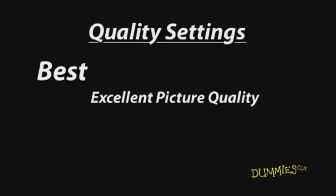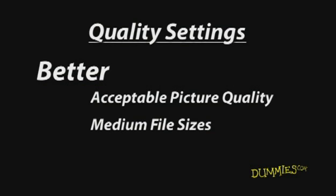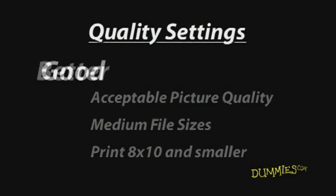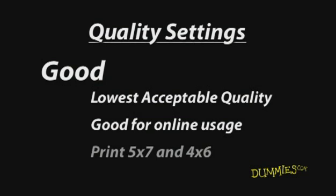Here's a brief description of the quality settings available on many digital cameras, including point-and-shoot and compact. Best gives you excellent picture quality with lots of detail. You get large file sizes which will produce quality large prints, such as 11x17. These files take up a lot of storage space. Better provides acceptable picture quality and medium-sized files. It's okay for prints that are 8x10 and smaller. Good is the lowest acceptable quality. Use Good for online usage and for smaller sized prints, such as 5x7 and 4x6.